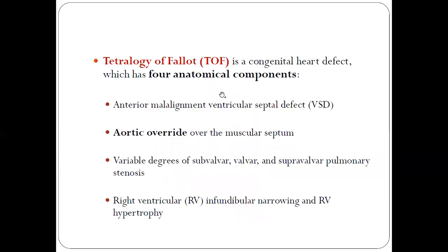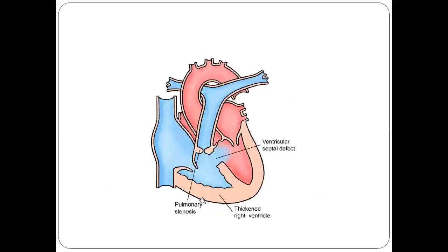So the four components of tetralogy of Fallot, as you are all aware, are: ventricular septal defect, overriding of aorta, variable degree of pulmonary stenosis — which can be valvular, subvalvular, or supravalvular — and right ventricular hypertrophy.